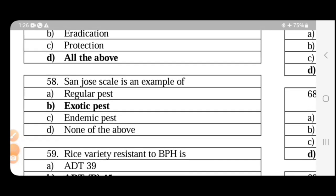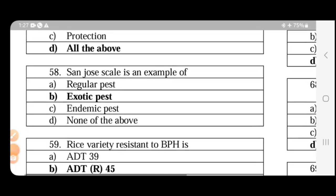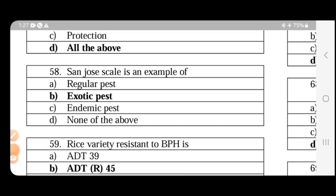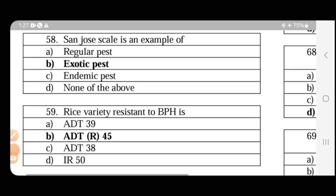San Jose scale is an important pest of apple. This is an exotic pest. This is actually native of China. In India, it was introduced in the early 20th century. This is an exotic pest.